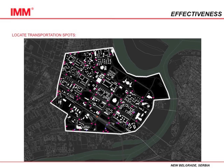Then we locate the transportation stops in the area. There are bus stops, tram stops, and also train stations. The orange will be the train stations, pink is the bus stops, and purple is the tram stops.